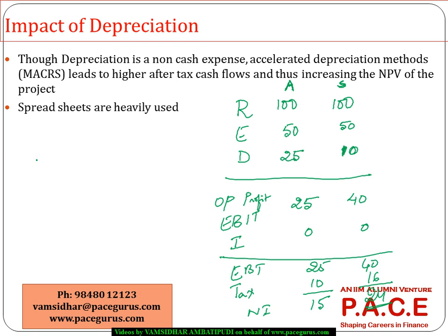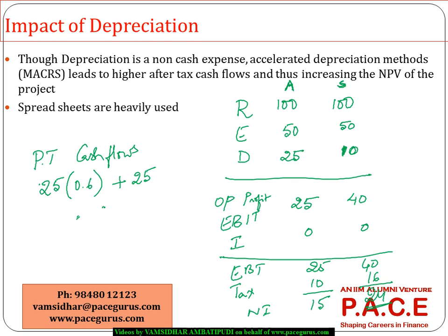When I find out after-tax cash flows in both methods: for accelerated depreciation, EBIT × (1 − T) + Depreciation = 25 × 0.6 + 25 = 15 + 25 = 40. For the straight-line method, EBIT × (1 − T) + Depreciation = 40 × 0.6 + 10 = 24 + 10 = 34. So post-tax cash flows are 40 under accelerated depreciation versus 34 under straight-line.